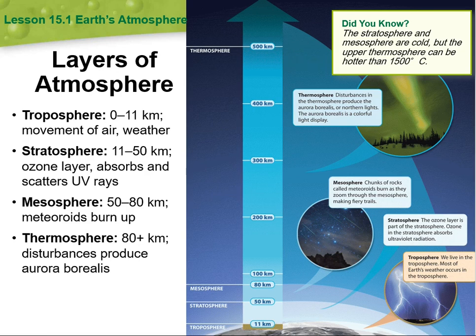Disruptions in the thermosphere produce the aurora borealis, or the northern lights — a colorful light display. In the mesosphere, chunks of rocks called meteoroids burn as they zoom through, making fiery trails.